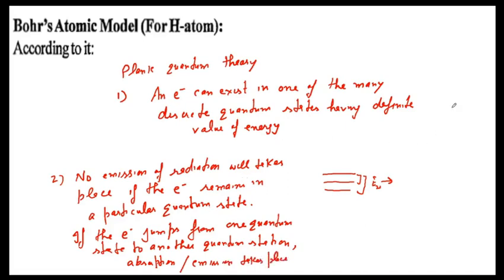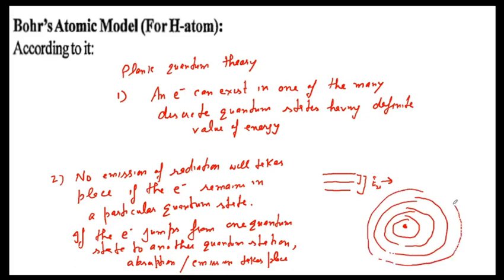To explain this: suppose these are discrete quantum states of electrons within an atomic structure. If the electron changes its position within the same quantum state — moving from one point to another in the same state — no energy change occurs. But when an electron jumps from one quantum state to another different quantum state, the energy of that electron will change.